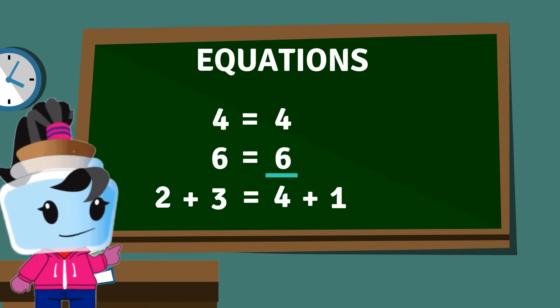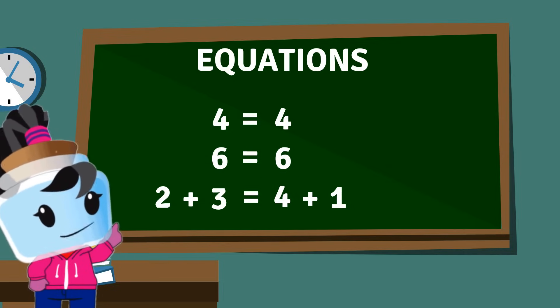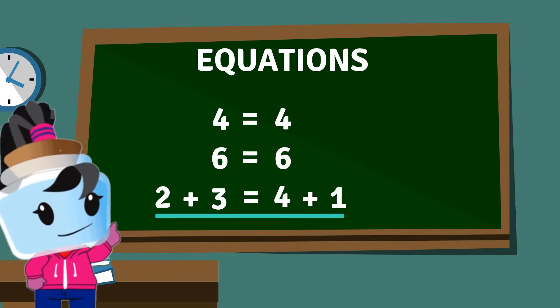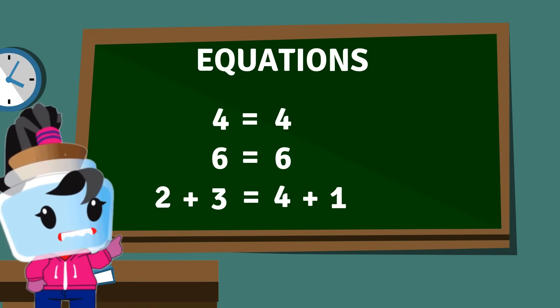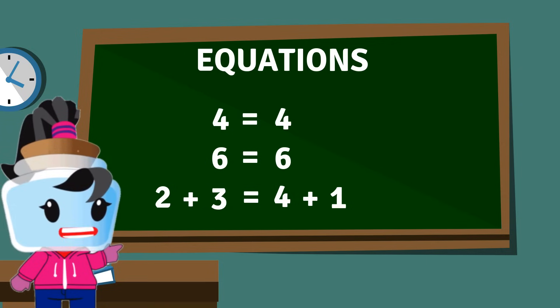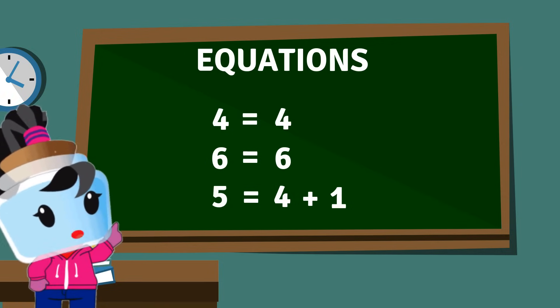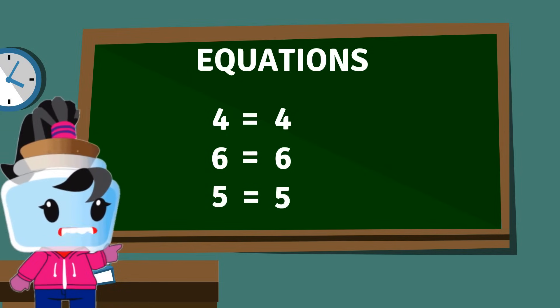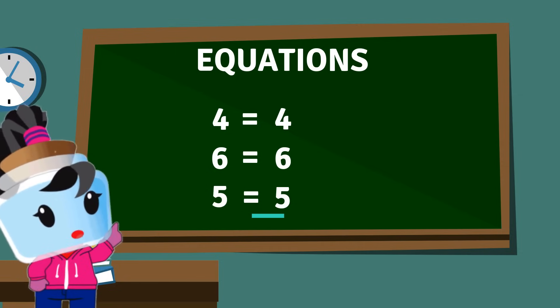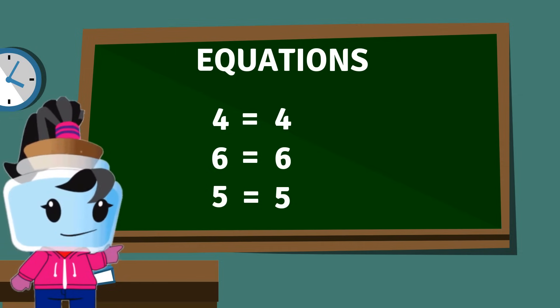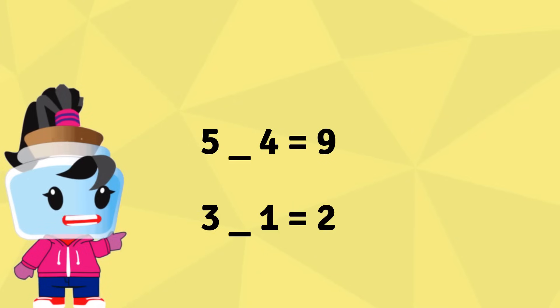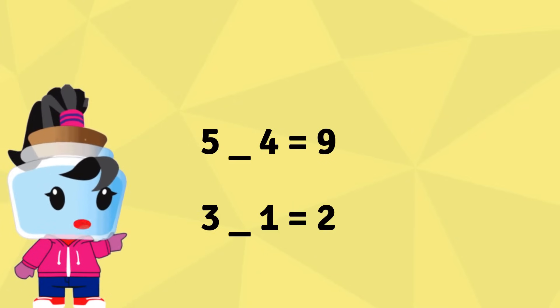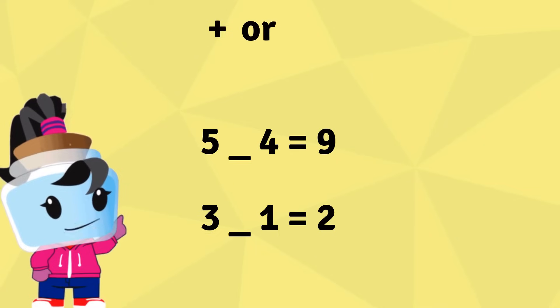Lastly, 2 plus 3 equals 4 plus 1. Since 2 plus 3 is equal to 5 and 4 plus 1 is also equal to 5, both sides of the equal sign are the same. To understand equations more, let's fill in the blanks below with either plus or minus.